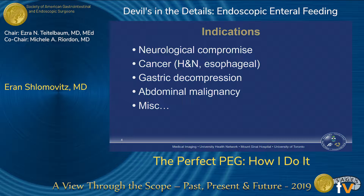The indications everybody knows: any type of neurological compromise where the swallowing mechanism is not working, or if they have an anatomic issue where they can't swallow. When picking which type of enteral access to choose, if there's any anatomic abnormality putting the patient at high risk of aspiration, maybe a PEG tube is not the best option. You can look at a jejunostomy or a GJ tube to decrease aspiration risk. These tubes are also used for decompression — gastric outlet obstruction or palliative malignant small bowel obstructions where you may want a venting gastrostomy tube.